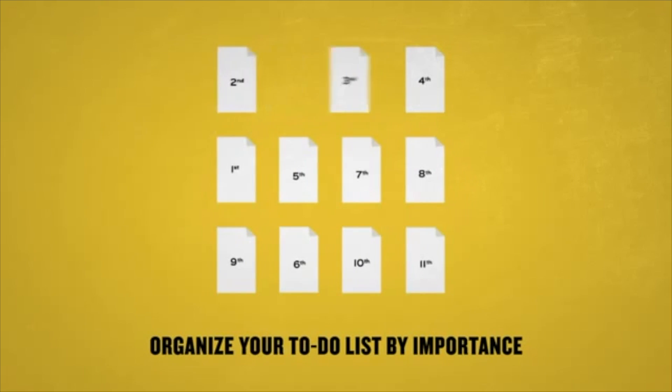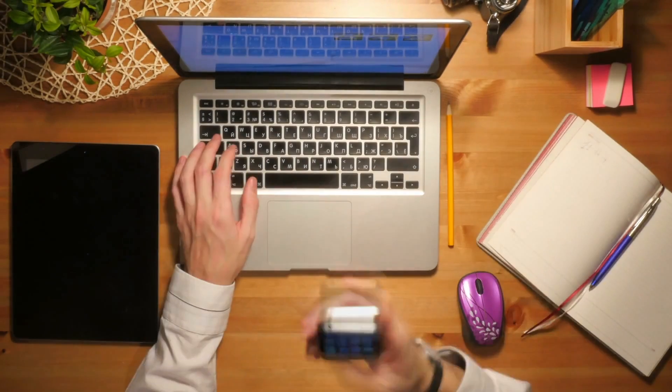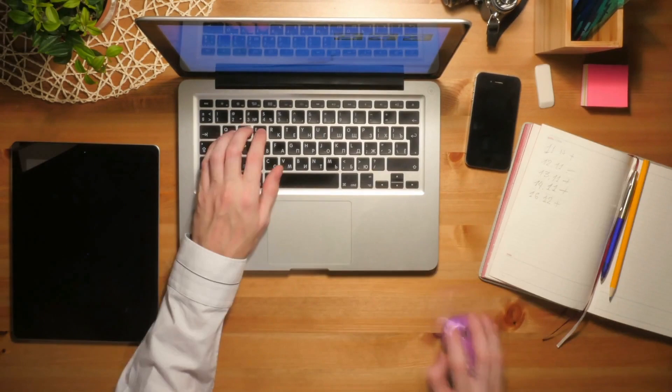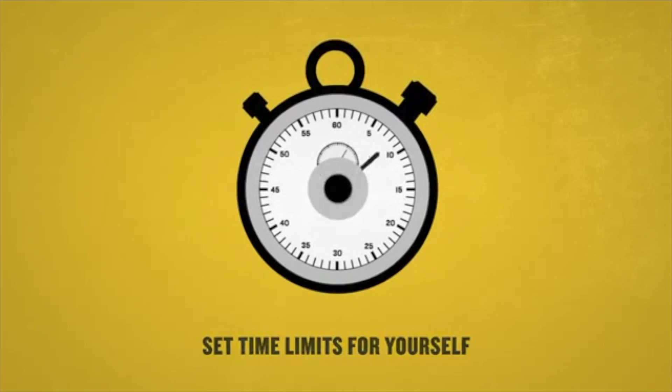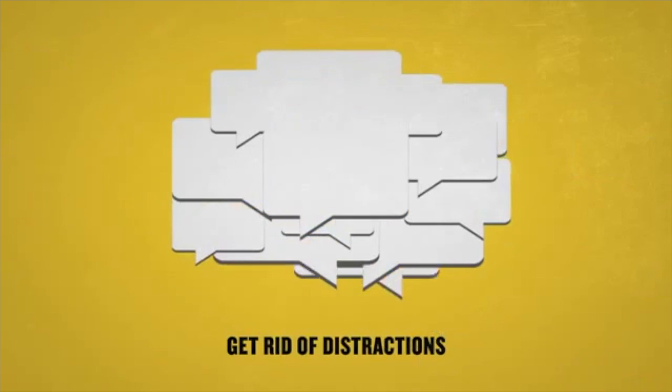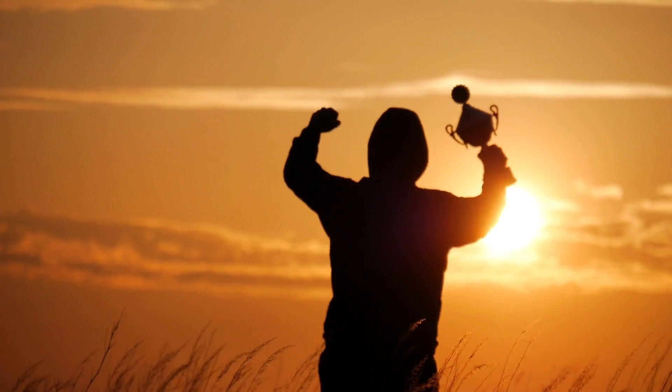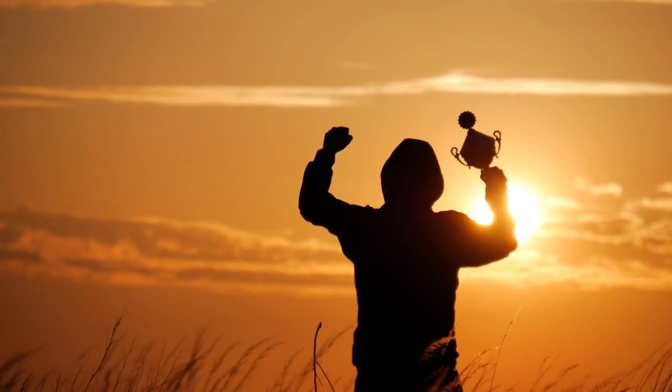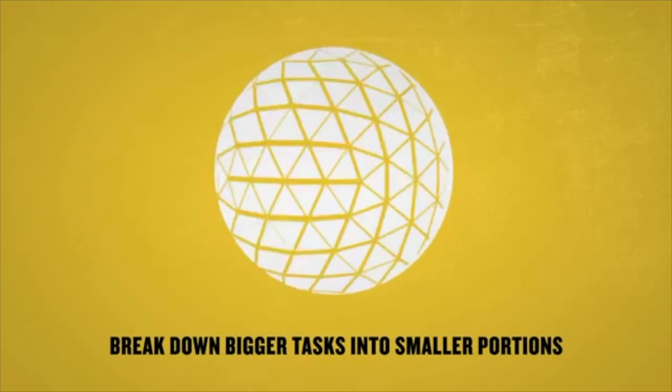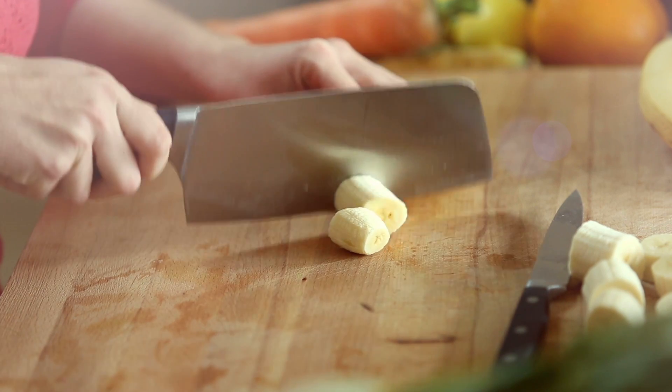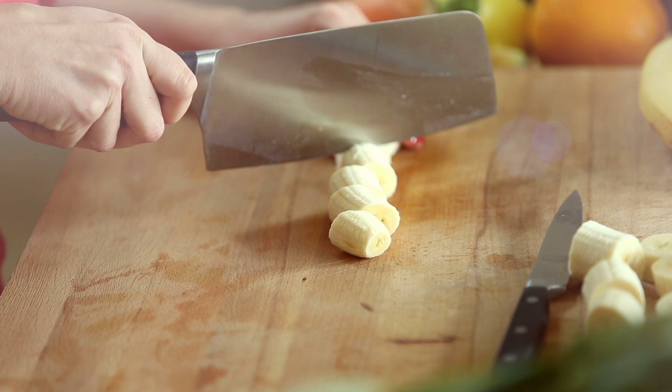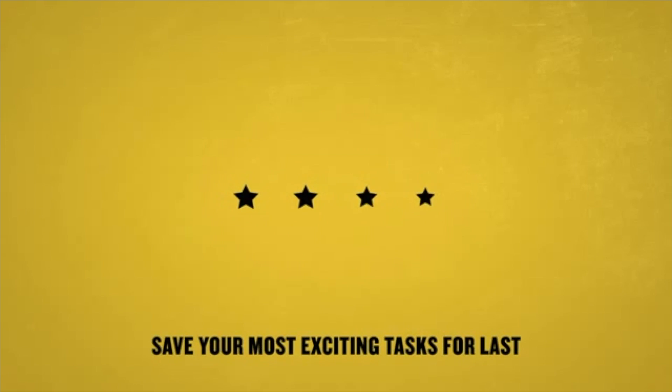Organize your to-do list by task importance. Set time limits for yourself. Get rid of distractions. Create a reward system when you complete big tasks. Break down bigger tasks into smaller portions. Single task rather than multi-task. Save your most exciting tasks for last.